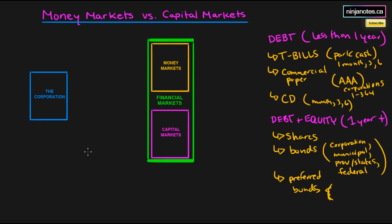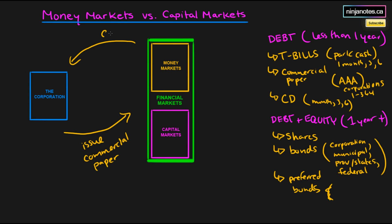Another example: if a corporation needs cash, it can issue commercial paper. Commercial paper is unsecured debt issued by the corporation — because of its high credit rating — and in return it receives cash. The corporation then pays back a small amount of interest in a very short period of time, anywhere between 1 and 364 days.